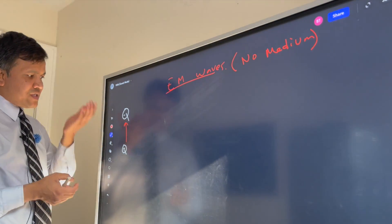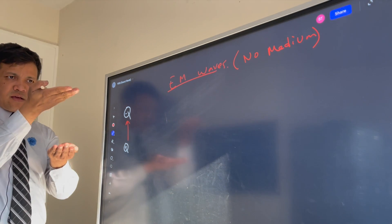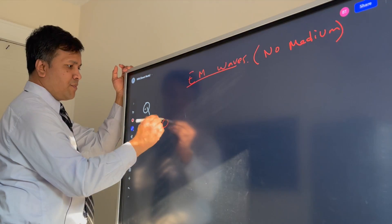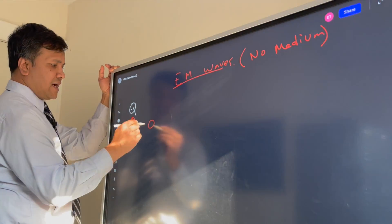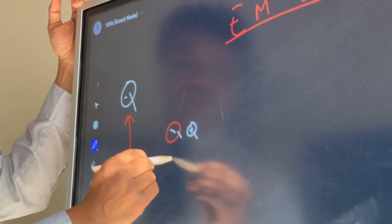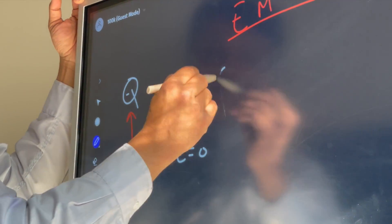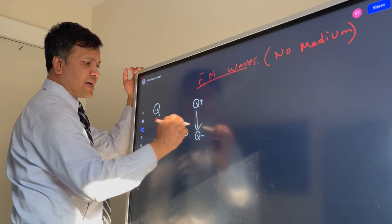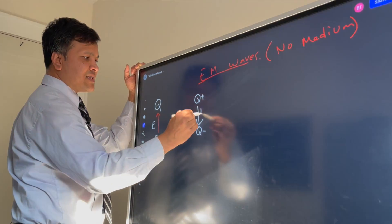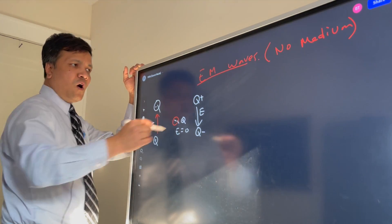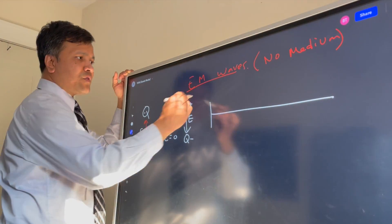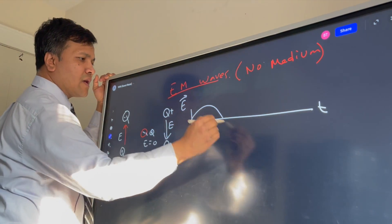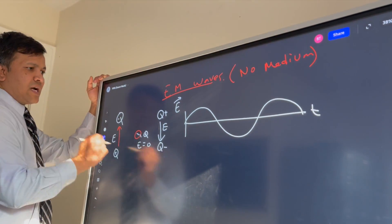As they oscillate, at some point the negative and positive charges change location. At some point they are at the same position, so the field is zero. Then they swap back, and we can plot this electric field with respect to time, which gives us a sinusoidal wave.